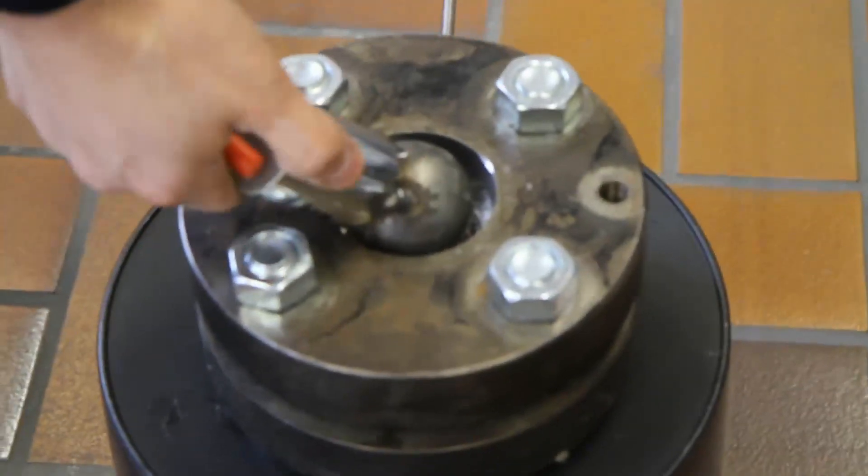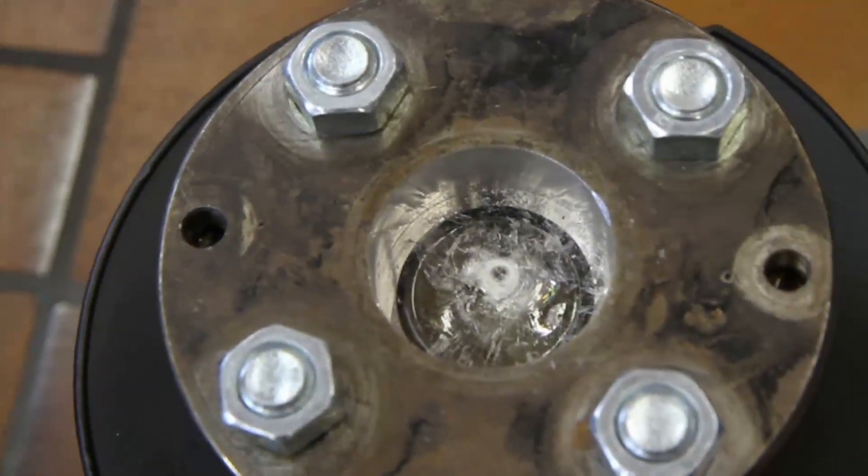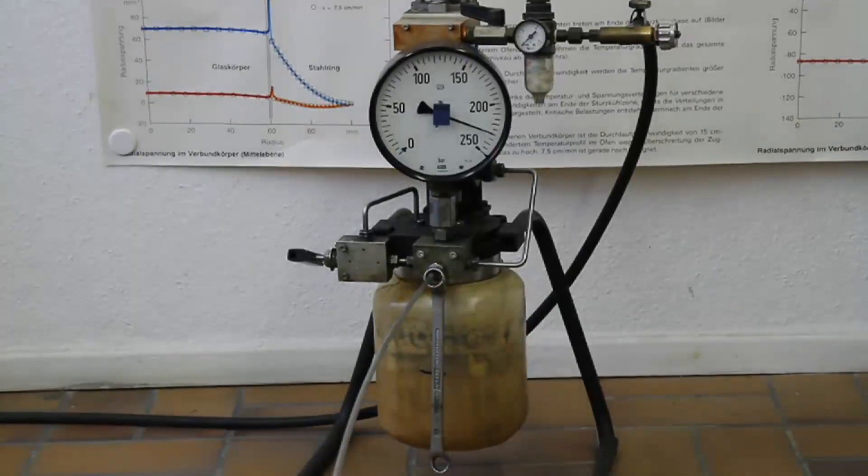Did the sight glass survive? Seven foot-pounds of force were enough to chip the glass, but the gauge shows no leaks.